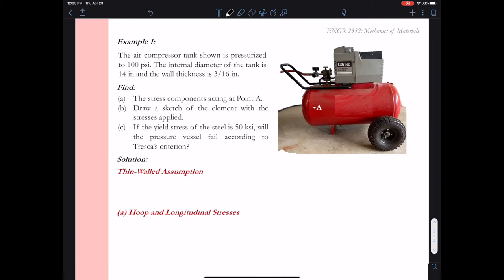We want to draw the stress components acting at point A along with their magnitude. And then we want to answer the question: if the yield stress of the steel is 50 ksi, will this pressure vessel fail using Tresca's criterion?